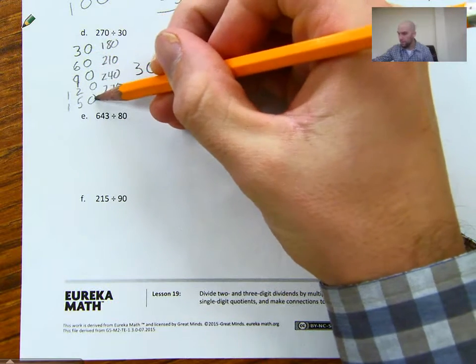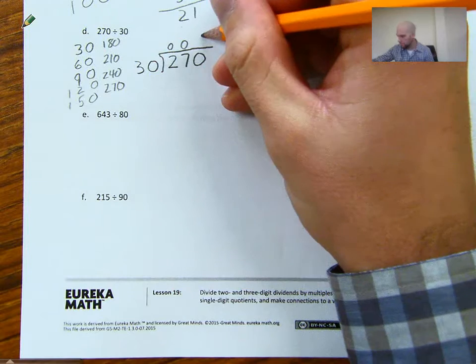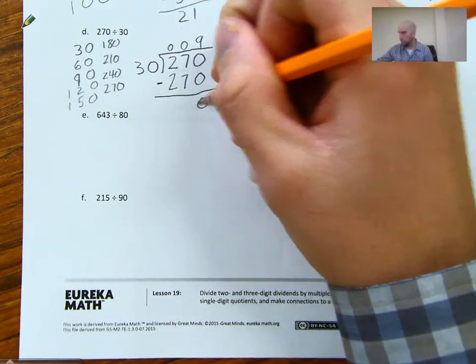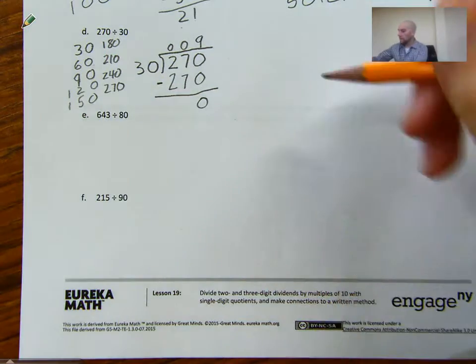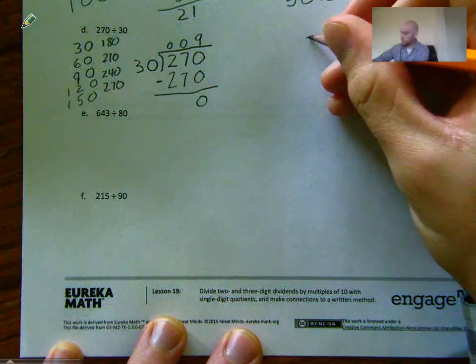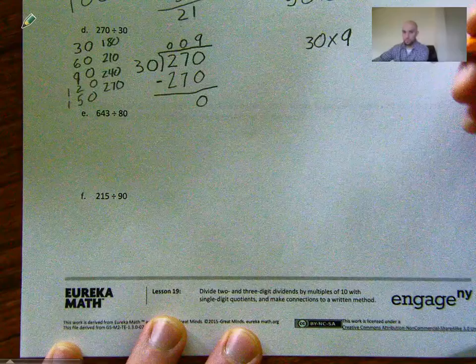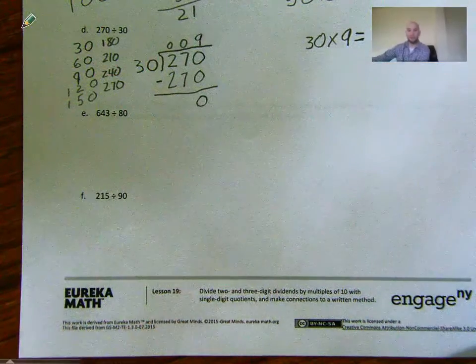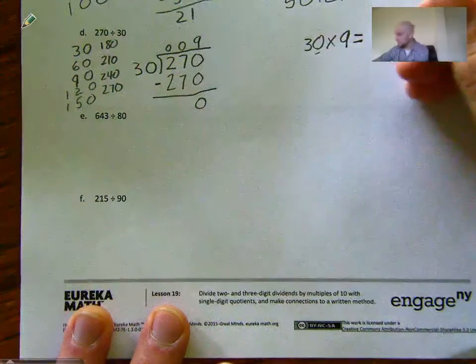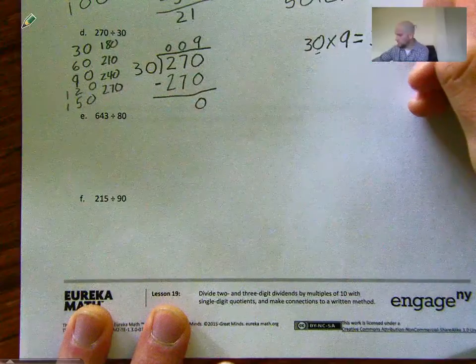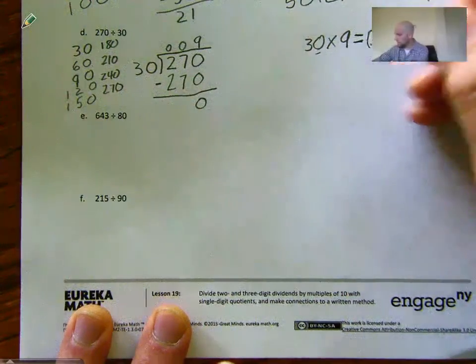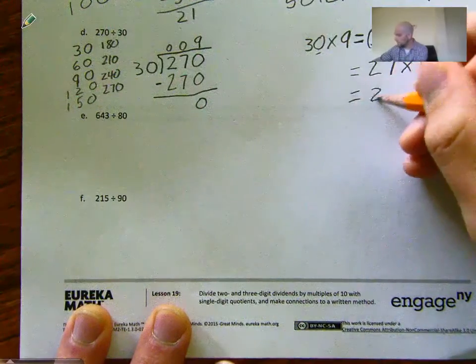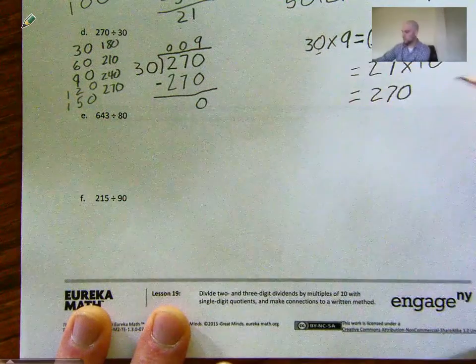How many times does it go in? 1, 2, 3, 4, 5, 6, 7, 8, 9. So when we subtract 270, we get 0. So we have no remainder. We can check that if we multiply 30 by 9. Well, I would just do 3 times 9, which is 27. And then I need to add my 0, because I'm going to multiply by 10. So I could also look at this as 3 times 9 times 10. Well, 3 times 9 is 27 times 10. I'm going to add my 0 and I get 270. So I know that is correct.